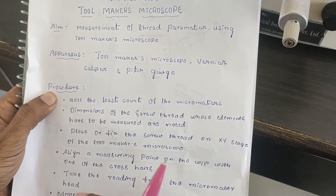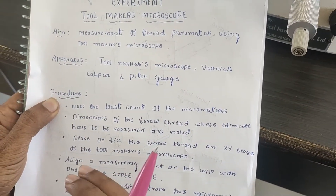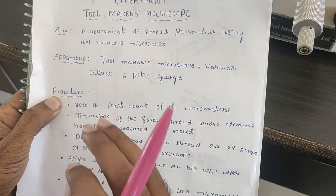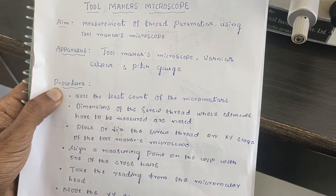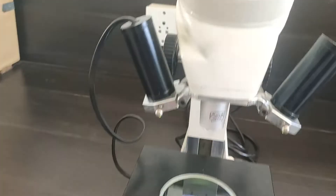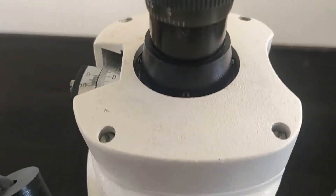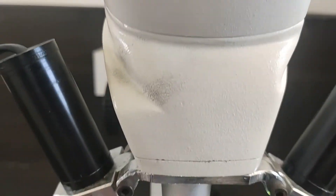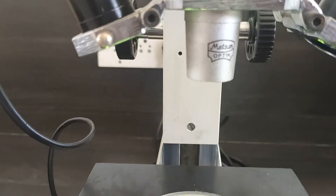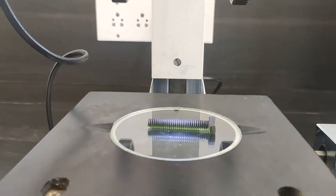For this purpose, the main components we are going to use include the tool maker's microscope device itself, and a vernier caliper which is used for measuring those parameters.